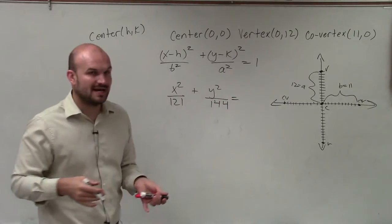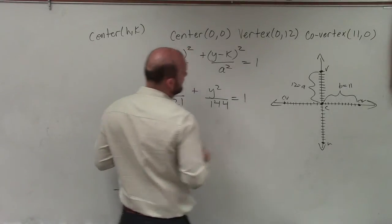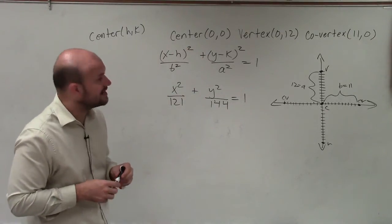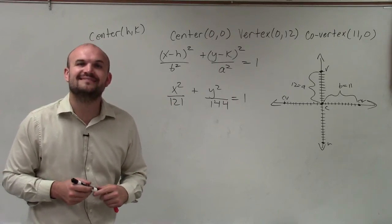So we don't need to know the foci to be able to write the equation. We simply have enough information already provided. And there you go, ladies and gentlemen. That is how you write the equation of an ellipse, given a vertex and a co-vertex and center. Thanks.